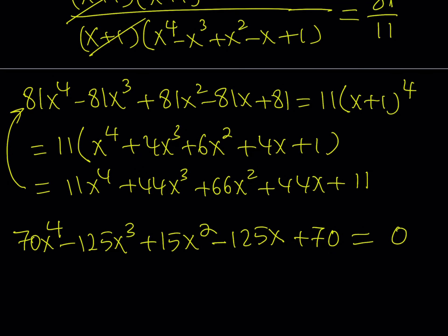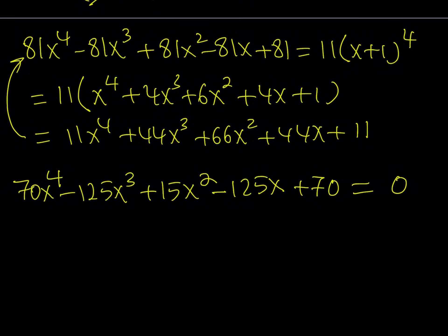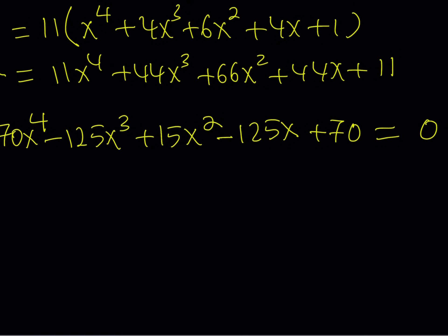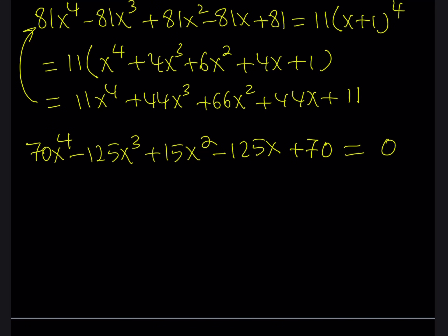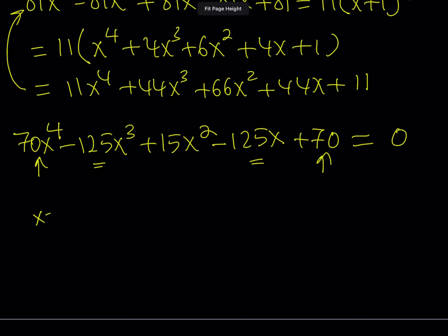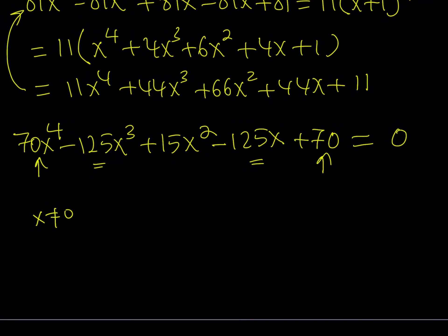This is a quartic equation, but not just any ordinary quartic — it's a symmetrical equation. So I can solve it easily by making a change of variables. The reason we call it symmetric is because the first and last coefficients are equal (70 and 70), and negative 125 and negative 125 are also equal, with 15 in the middle. One thing we can do is divide everything by x squared. We know x does not equal 0, so let's go ahead and do that.